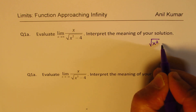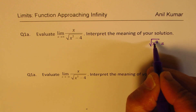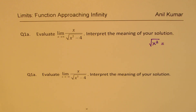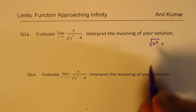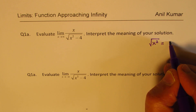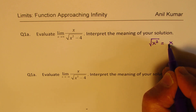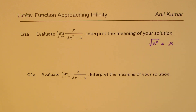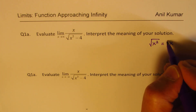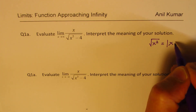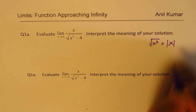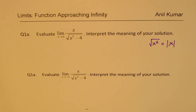Square root of x squared is always positive. If you write it as simply x, that will be incorrect since x could be negative or positive. So basically it is the absolute value of x. That is point one.